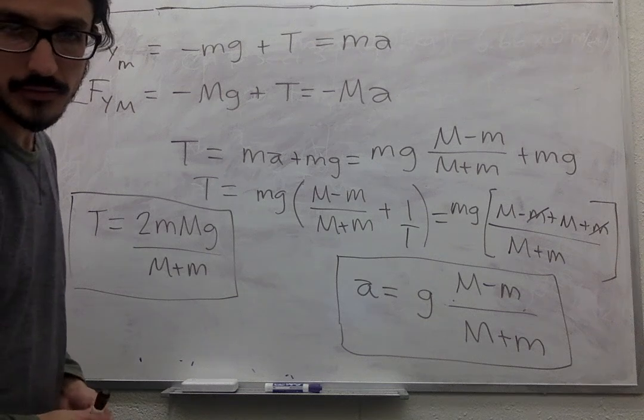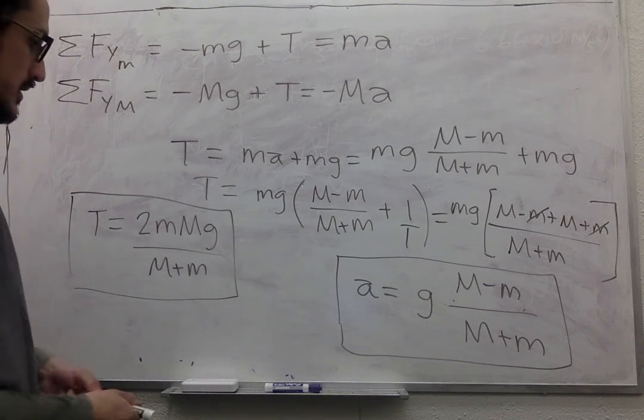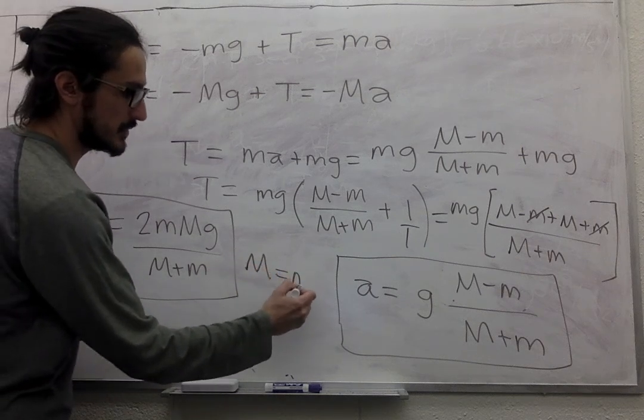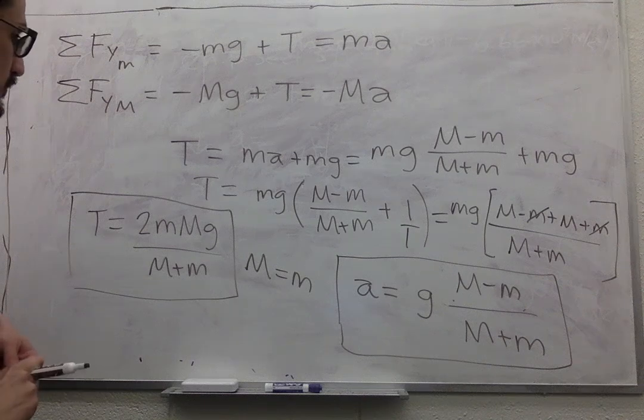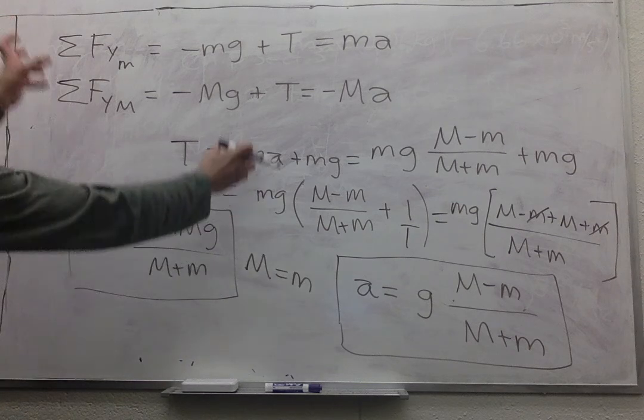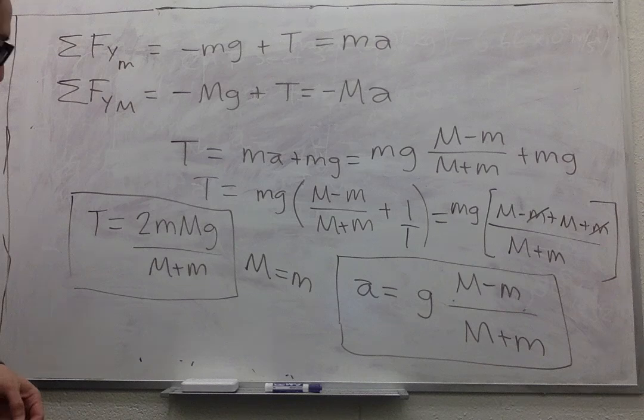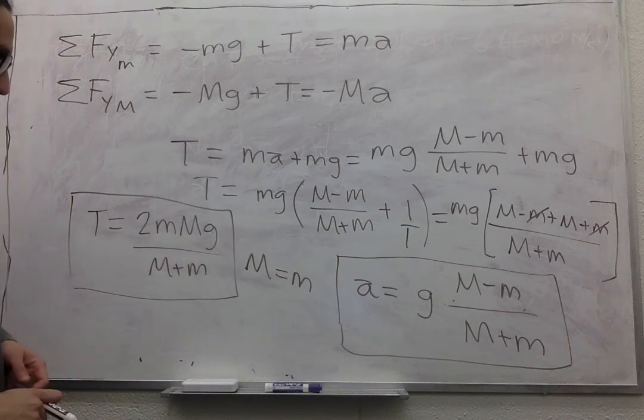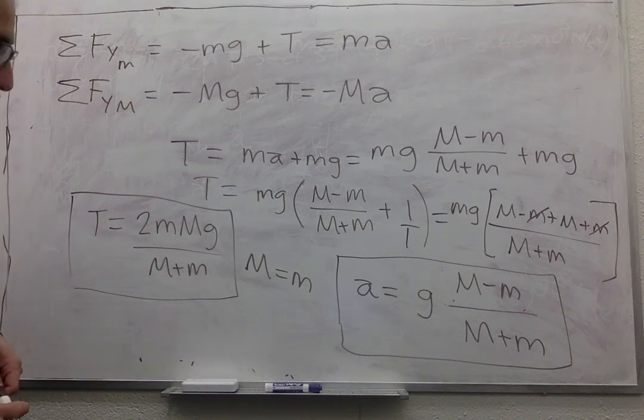So it says that many people expect that in the special case in which big M equals small m, the two masses will naturally settle down to an equilibrium position side by side. Based on your answer from part B, which is this one, is this correct?